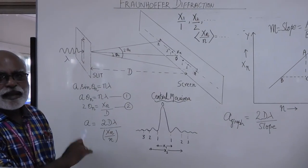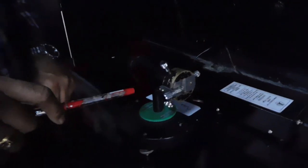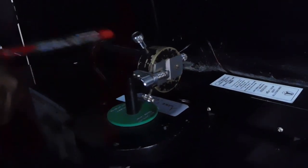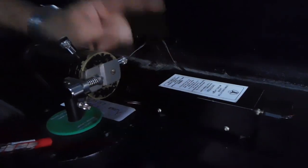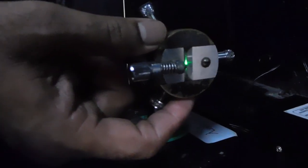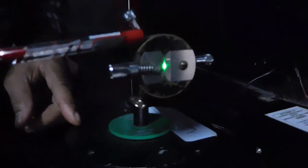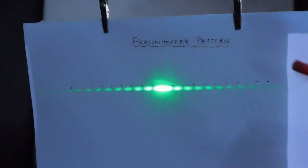We are now in the dark room of our laboratory. We have a solid state laser here which gives laser light of green wavelength of 530 nanometers. This is connected to a power supply connected to the mains. We also have an adjustable slit which can be fixed to the front of the solid state laser setup, and the width of the slit can be adjusted using the tangential screw. When the laser is switched on, the diffraction pattern is obtained on a screen kept a few meters away from the laser source.